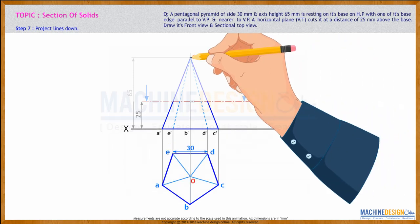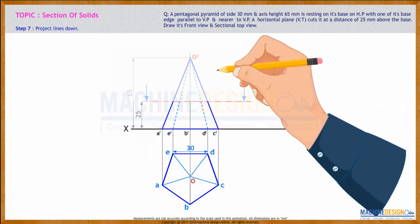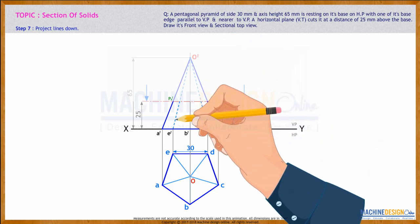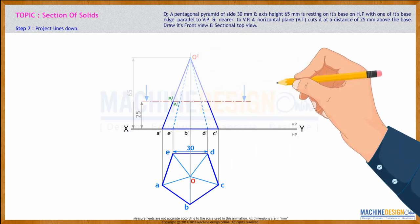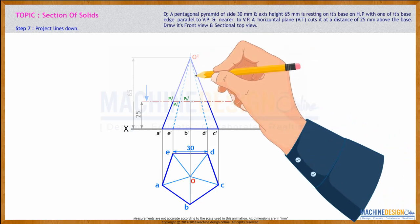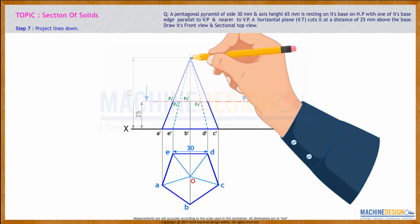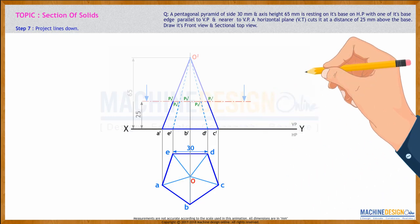If you see here, O'A' gives us PA'. O'E' gives us PE'. O'B' gives us PB'. O'D' gives us PD'. O'C' gives us PC'.